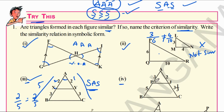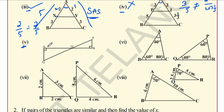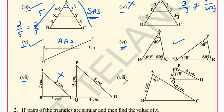Fourth pair: triangles APJ and ABC are not similar because their corresponding sides are not proportional — 3/5 is not equal to 2/(2+3) = 1/3. Fifth pair: triangles AQO and POB are similar according to AAA criteria. Sixth pair: triangles ABC and QP have the same corresponding angles, therefore they are similar. Seventh and eighth pairs: both are not similar because their corresponding sides are not equal.